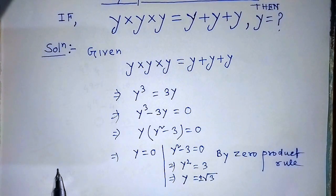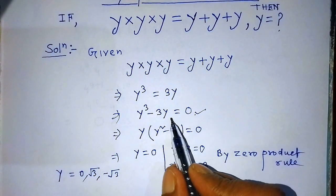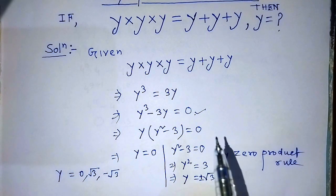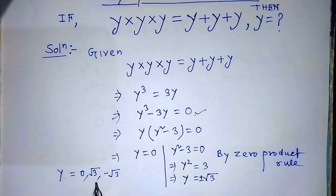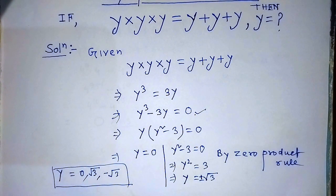The value of y is equal to 0, positive square root of 3, and negative square root of 3. This equation is a cubic equation, so it has 3 solutions: 0, positive square root of 3, and negative square root of 3. This is our final answer. If you like this video and this trick, please support me and subscribe to my channel. Thank you. Bye-bye.